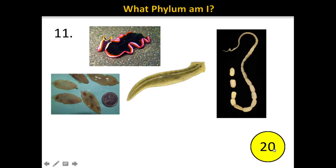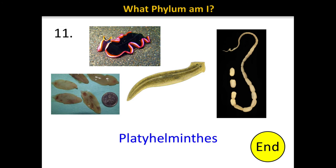Number 11. The correct answer is Platyhelminthes. These are all pictures of flatworms. In the middle we have what's called a planarian, at the top a marine flatworm, the bottom left shows flukes, and on the right side we have a picture of a tapeworm.